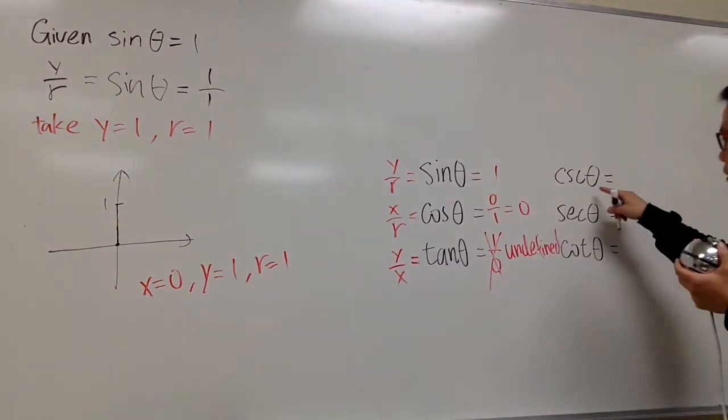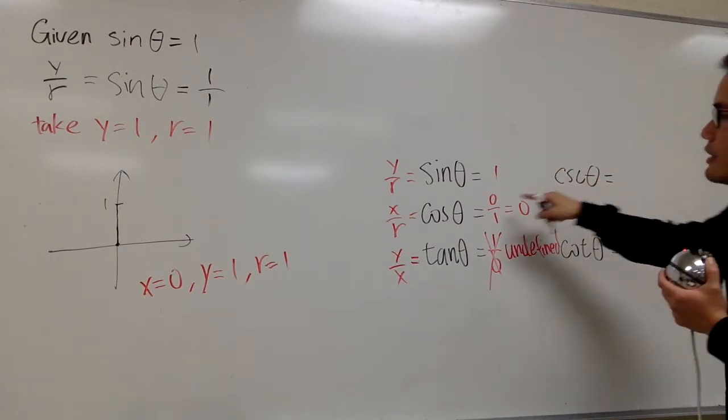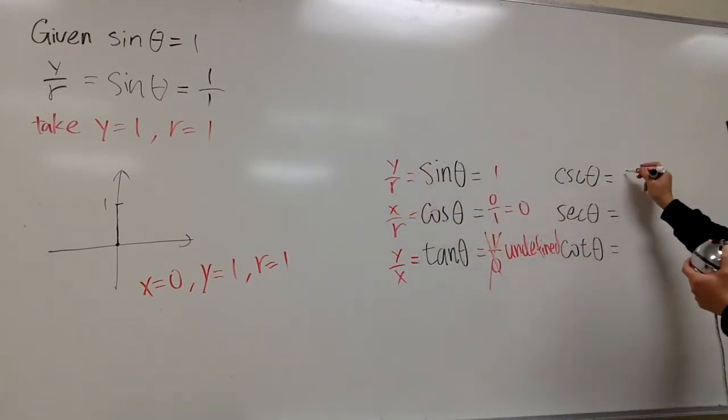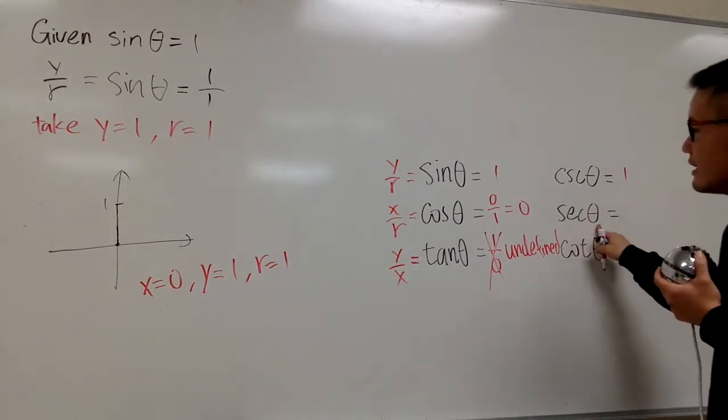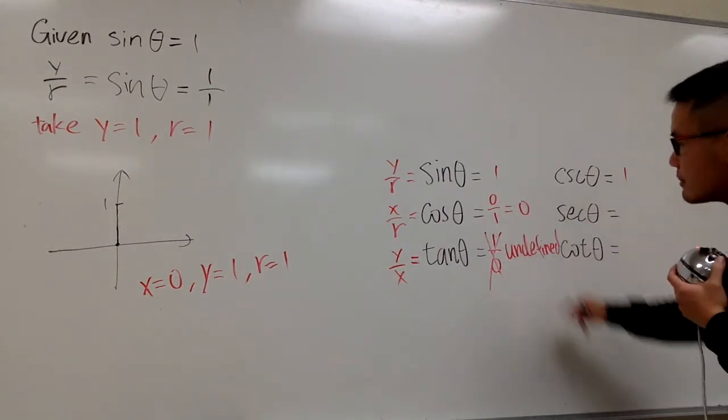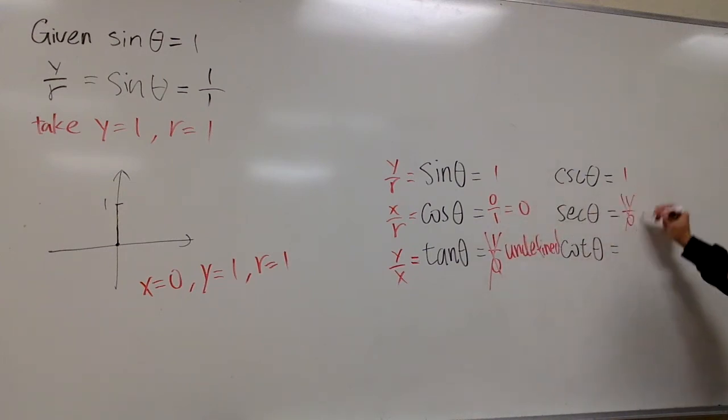Moving on to cosecant theta. Cosecant theta is just r over y, which is the same as just 1, 1 over 1. Secant theta is the reciprocal of this becomes 1 over 0. That's bad, because this right here, it's also undefined. We cannot have a 0 in the denominator.